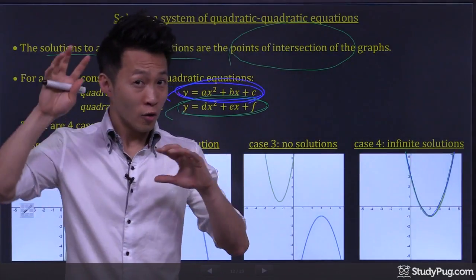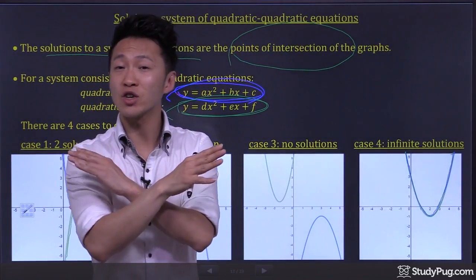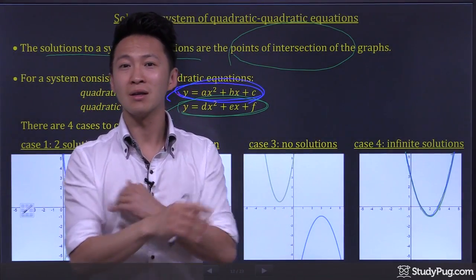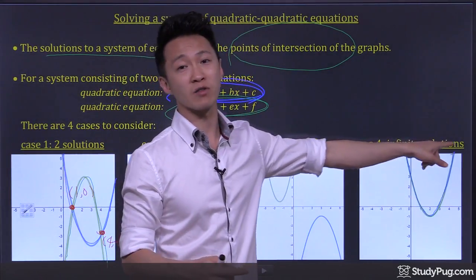For two equations that completely overlap, how many times do they intersect each other? Infinite times. So in this case, there are infinite number of solutions.